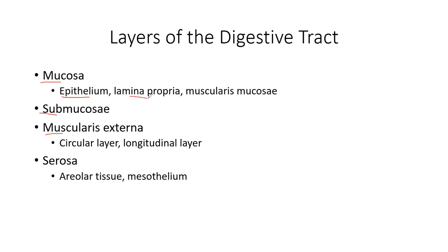Then you have a middle portion called the lamina propria, and then the muscularis mucosa, which is a smooth muscle. There's another layer called the submucosa. Then there is an external muscle that is circular and longitudinal — and if you're talking about the stomach, there would be a transverse layer also. The serosa is areolar tissue, very thin and spread out, providing a pathway for blood vessels and nervous tissue. This is called the mesothelium.